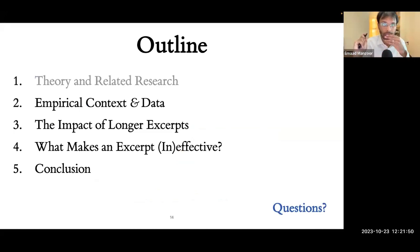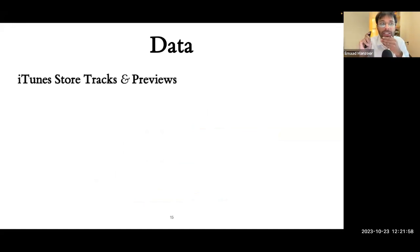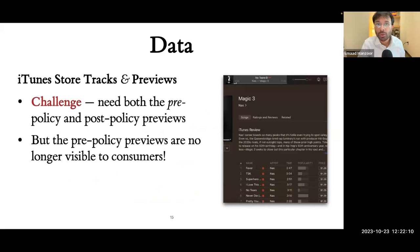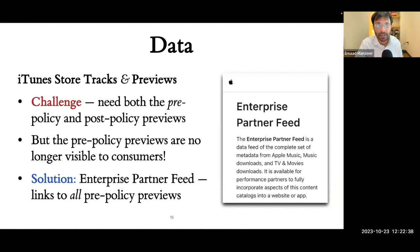To answer this question, we need two sources of data. The first is tracks and previews on the iTunes music store. The challenge is we need both pre- and post-policy previews. The post-policy previews are the 90-second ones available today, but we can also access the pre-policy 30-second previews through the Apple Enterprise Partner Feed, which contains links to every song's 30-second preview. The iTunes software itself has the post-policy previews, allowing us to combine them and get all previews for tracks on iTunes.